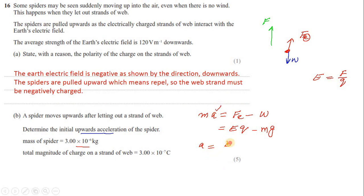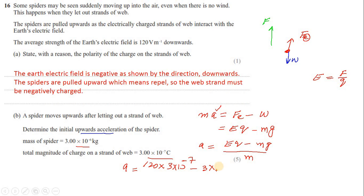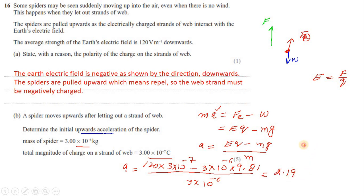Acceleration is equal to EQ minus MG divided by M. Substituting all the numbers: E is 120 volts per meter, charge on the web is 3×10⁻⁷, mass of the spider is 3×10⁻⁶, and G is 9.81. Divided by mass of the spider which is 3×10⁻⁶. Solving this gives acceleration equal to 2.19, so acceleration is 2.2 m/s².